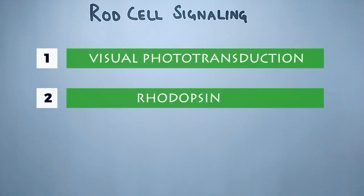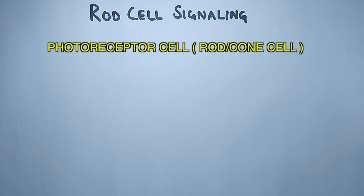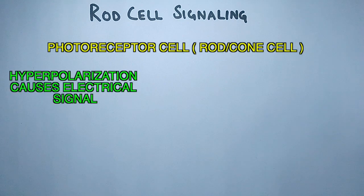Before getting into the signaling pathway, first we will see what causes excitation or activation and deactivation of rod cells. Here we see the photoreceptor cell signals or causes electric signal only when there is hyperpolarization, that means when the cell is not producing any transmitter. At that time there will be phototransduction, whereas depolarization of photoreceptor cells stops the phototransduction pathway.